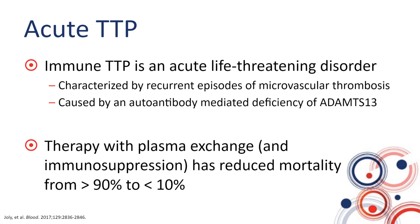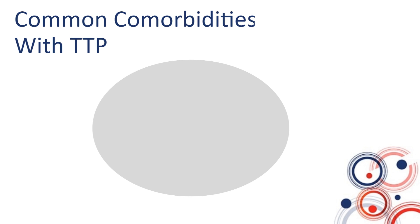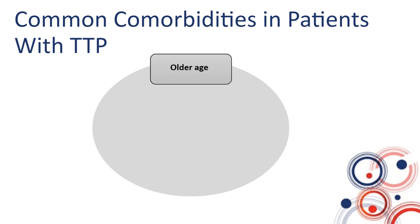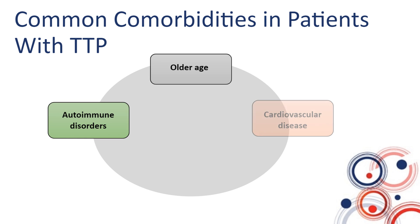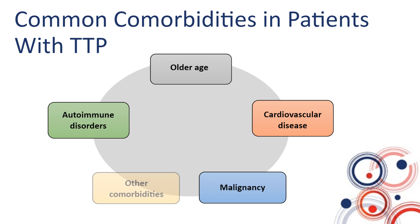Therapy with plasma exchange and immunosuppression has revolutionized the treatment of TTP, and mortality has gone from over 90% to less than 10% with acute episodes. In terms of comorbidities common in patients presenting with TTP, we have older age — up to 20% of patients will be older than 60 — autoimmune disorders, cardiovascular disease, cancer, and other comorbidities.